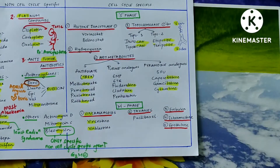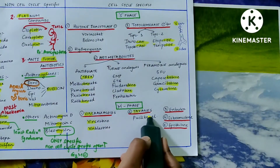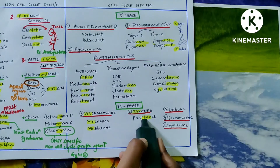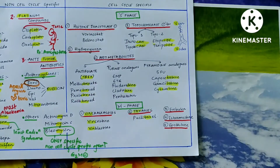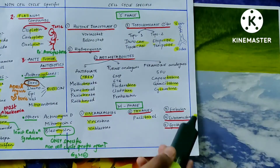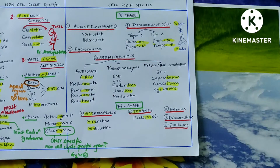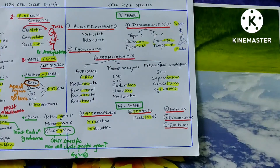In M phase, vinca alkaloids include vincristine and vinblastine — both start with 'vin.' Taxanes include paclitaxel. The miscellaneous M-phase drugs are eribulin, estramustine, and epothilone.